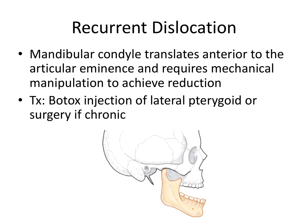Recurrent dislocation is rare but can occur — for example, opening the jaw very wide such that the condyle translates so far forward it gets stuck in front of the articular eminence rather than returning to its fossa. The mandibular condyle translates anterior to the articular eminence and requires mechanical manipulation to achieve reduction. To reposition the jaw, you rotate it downward and then back to get over the hump of the articular eminence. Chronic cases may be treated with Botox injection of the lateral pterygoid muscle or surgery.